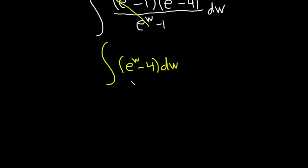And then when you integrate e to the w, you're just going to get e to the w. And then when you integrate the 4, you get 4w. So minus 4w.